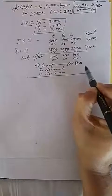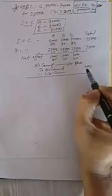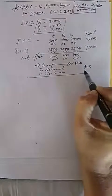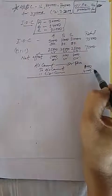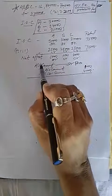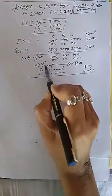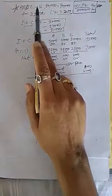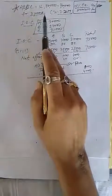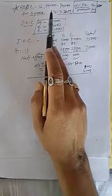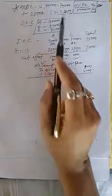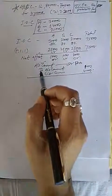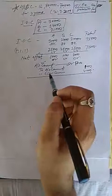Journal entry in this case: A's current account Dr, to B's current account, to C's current account — amount will be five thousand for A, one thousand for B and four thousand for C. Current account is used because the partners' capital is fixed here. When partner capital is fluctuating it will be partners' current account, as explained in the previous video.